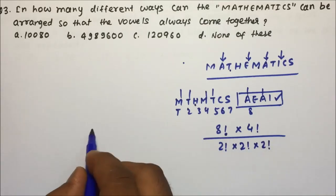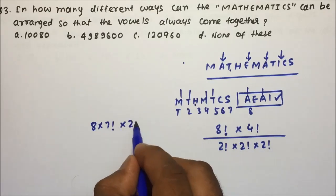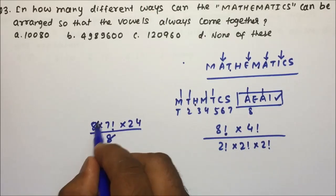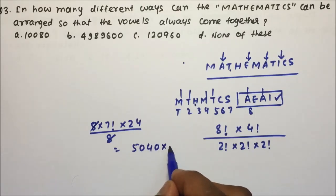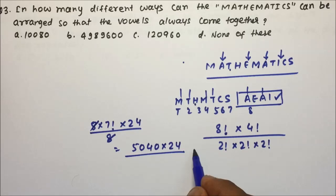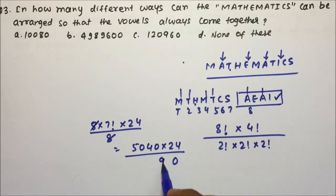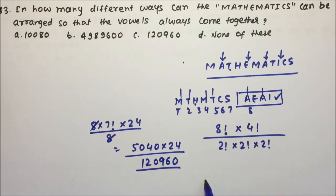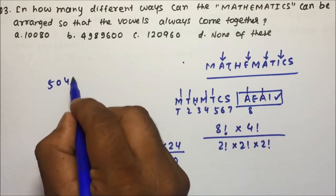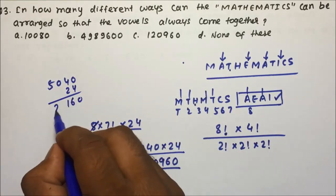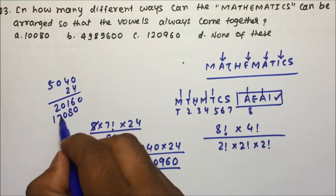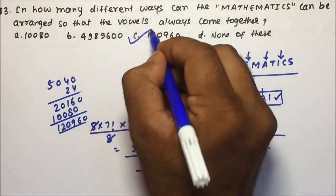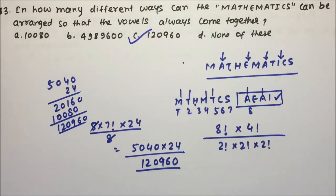Solving: 8 factorial is 40320, divided by 2!×2! which is 4, gives 10080. Then 4 factorial is 24, divided by 2! which is 2, gives 12. So 10080 × 12 = 120,960. Therefore, option C — 120,960 — is the correct answer for question number 3. Friends, I hope you understood all 3 questions; they are all very important for your exam. Thanks for watching the video.